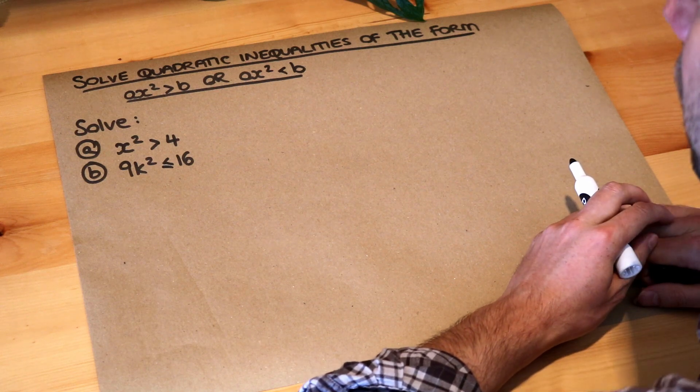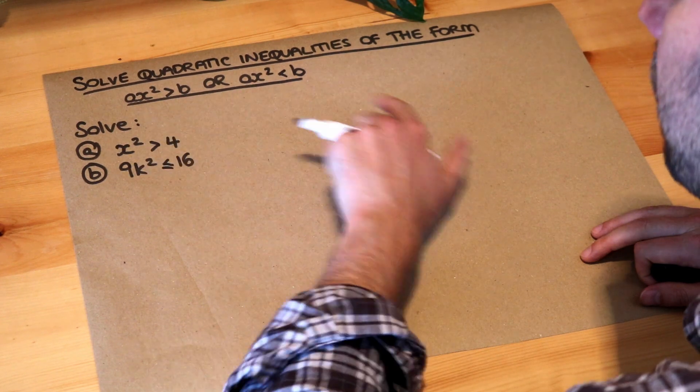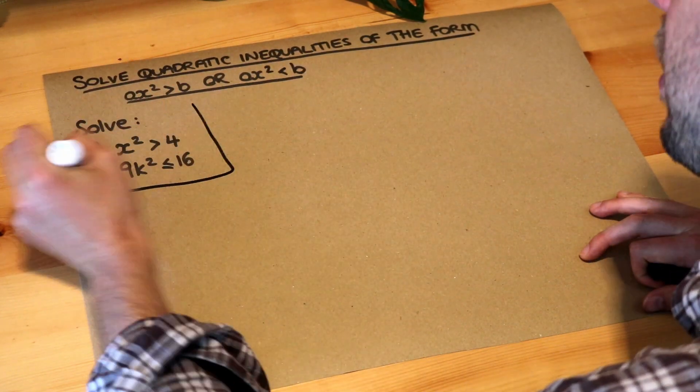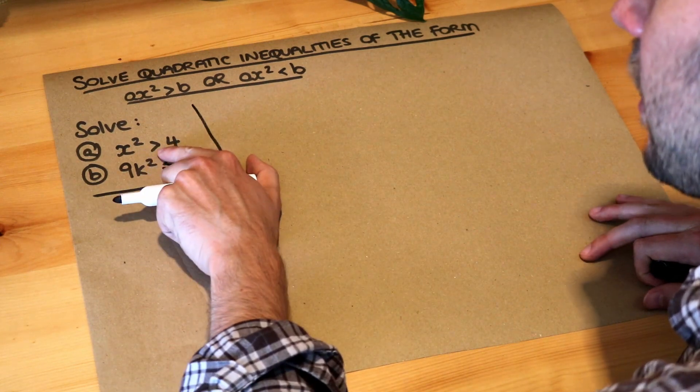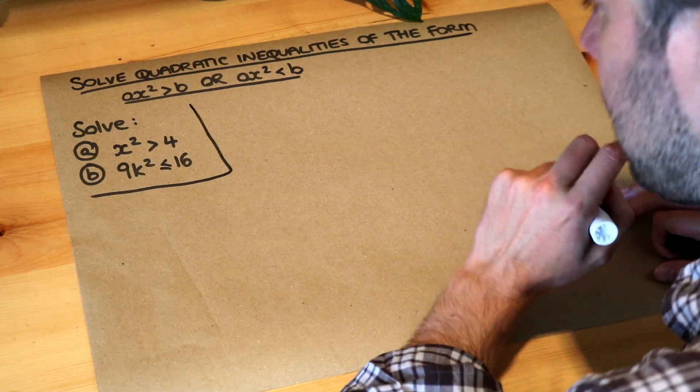Hello and welcome to this Dr Ross video on solving quadratic inequalities of the form ax squared is greater than b or ax squared is less than b. So we've got these two problems here: solve x squared is greater than 4 and solve 9k squared is less than or equal to 16.